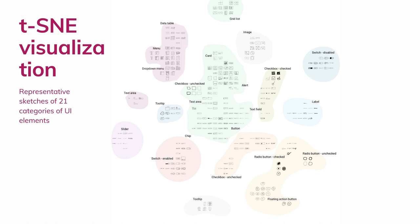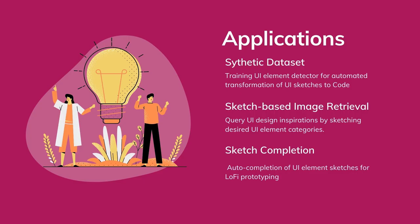We further found that computational recognition errors are caused by confusion between structurally similar UI element categories. To analyze why the model confuses certain element categories, we used the ResNet-152 model as a feature extractor along with t-SNE to reduce the dimensionality of the test dataset images and plotted them as a 2D graph. This graph clearly shows that the computational classification model clusters images based on structural similarities, unlike humans.